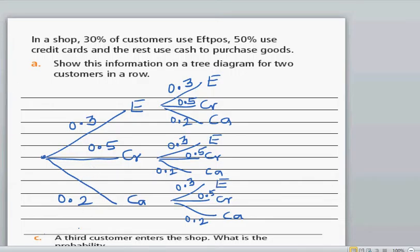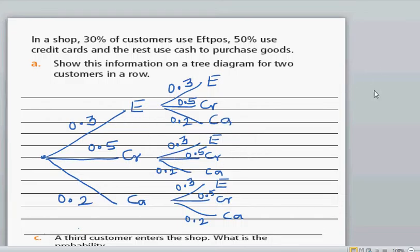This is a tree diagram of two customers entering a shop. The information given is that 30% of customers use FPOS, 50% use credit card, and the rest use cash. In the tree diagram, the probability for FPOS is 0.3, for credit is 0.5, and for cash is 0.2.